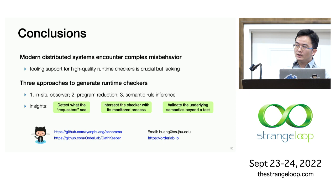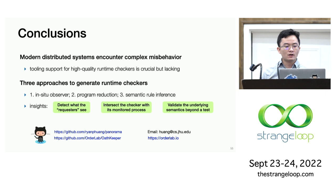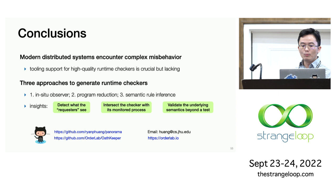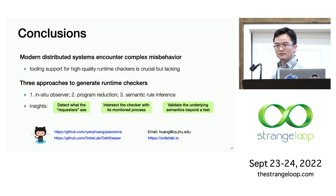In conclusion, production distributed systems today often exhibit complex misbehavior which requires high-quality runtime checkers, but manually writing such checkers is difficult. This talk gives a survey of three approaches of tooling support to generate runtime checkers: in-situ observers, program reduction, and semantic rule inference. Quite some detail of those solutions is left out due to time constraints, but I'd be happy to chat offline and send you the papers if you're interested. Thank you for your attention, and I can take questions.